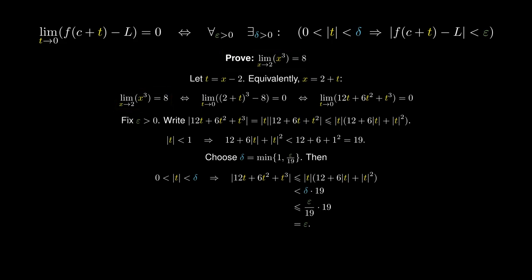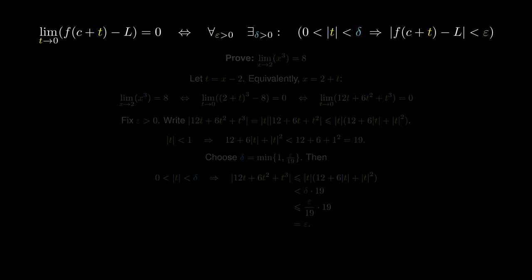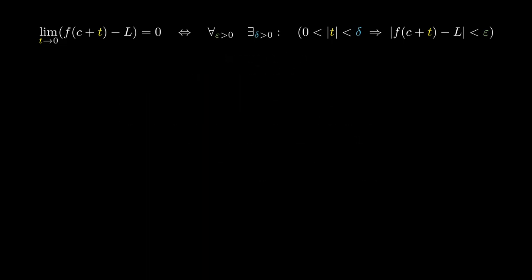One of the most important limits in calculus is showing that the limit of e to the t minus 1, all over t, as t approaches 0 is 1. If you want to know how to prove this limit, click on this video here.